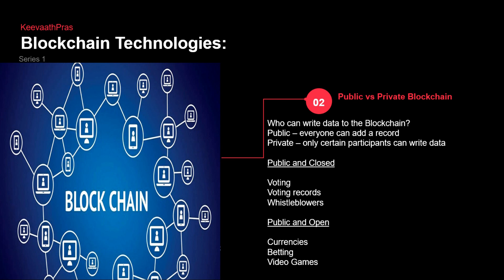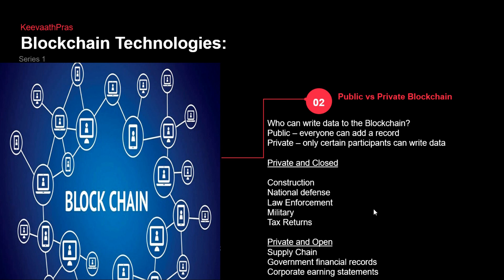In public we have multiple segments: public-and-closed and public-and-open. Public-and-closed means everybody can participate but it is still closed — like voting records and whistleblowers. Public-and-open means it is open to the public — like currency, betting, and video games. Private also has two segments. Private-and-closed includes construction, national defense — only a closed network of people can participate and decide configurations of a submarine or a missile.